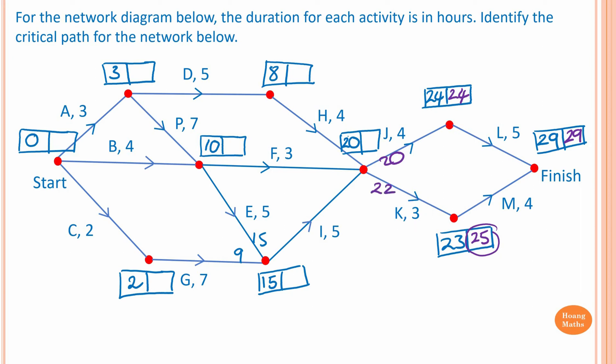The smallest number is twenty, so we write twenty down. Then twenty minus four is sixteen. The latest starting time for activity H is sixteen.